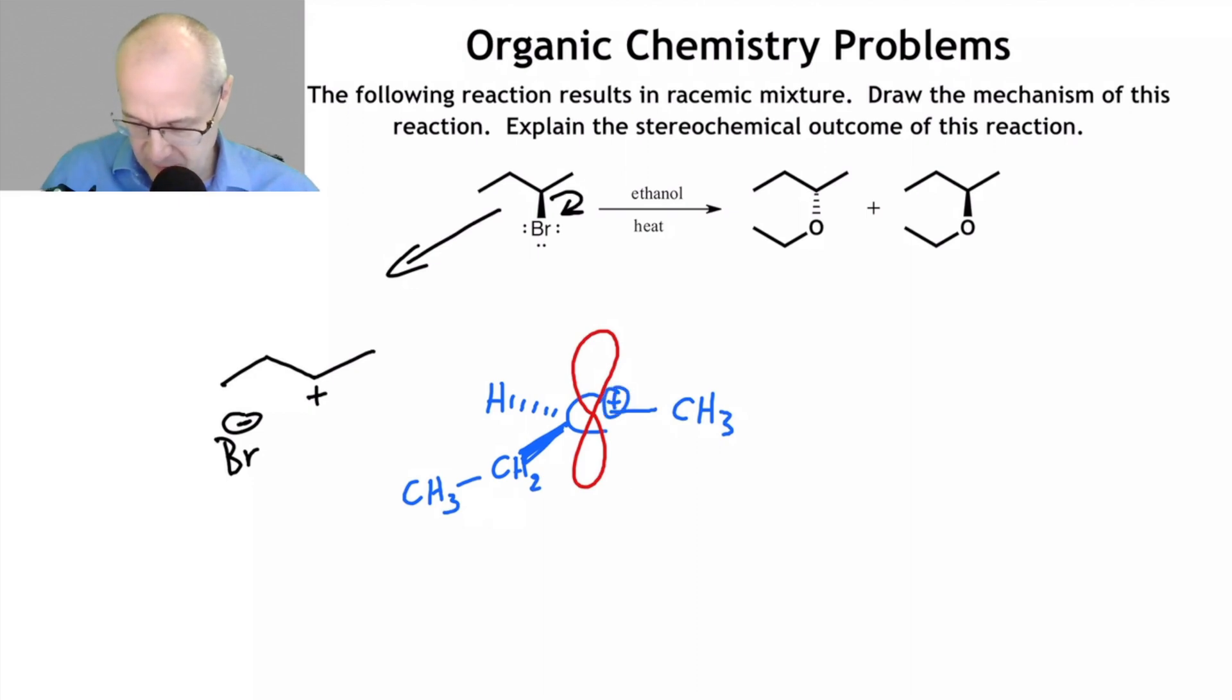So now the nucleophile can attack from the bottom or from the top in equal abundance. They can attack from the top or the bottom equally. And that's how this works. We're going to get the ethanol approaching from the top side and the ethanol approaching from the bottom side. And that's how this is going to give us the correct mechanism. So let's back out of here so we can do the mechanism.